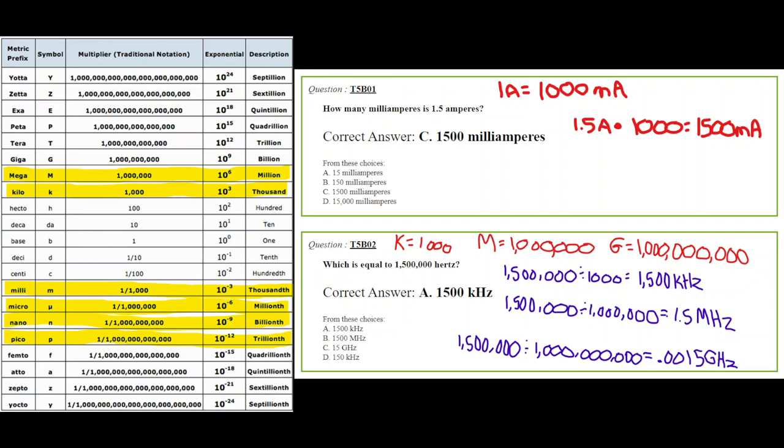But there's another way you can do it. A milliamp is equal to, or 1,000 milliamps is equal to 1 amp. So if you're converting amps to milliamps, you've got to multiply times 1,000. And that gives you 1,500 milliamps, or milliampers, as they call it on the test. You can look at the chart to the left, and you can see the relationship of a unit. They call it the base, but we're going to call it the unit. In this case, our unit was amperes.